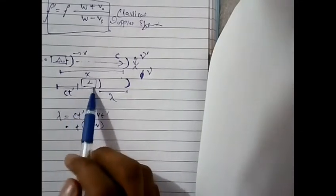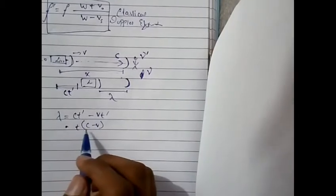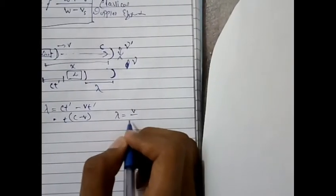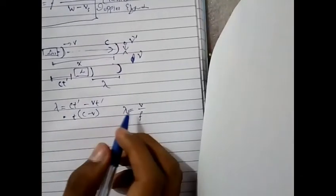X minus V D prime that means the distance which the source traveled that will give us the value of this lambda which is D times C minus V.